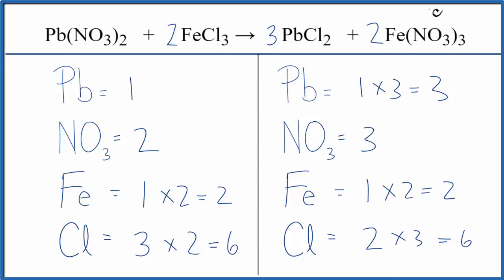And the two applies to everything. So I have the one nitrate times three, so I have three nitrate ions times two. That's six.